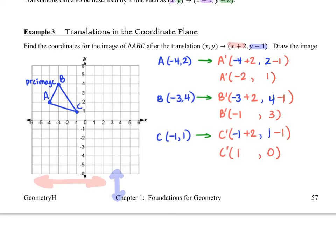A prime is at negative 2 comma 1. B prime is at negative 1 comma 3. And C prime is at 1 comma 0. So using the mapping symbol, we're able to find the coordinates of the image, and when we graph both the pre-image and the image, we can see that a transformation, specifically a translation, has taken place where we moved 2 in the horizontal direction, in the positive horizontal direction, and 1 down or 1 in the negative vertical direction.